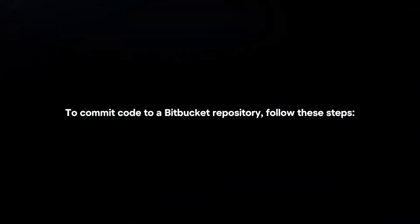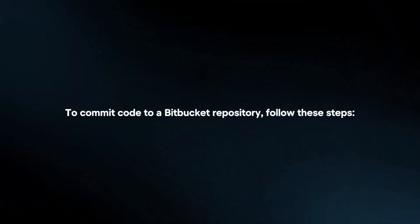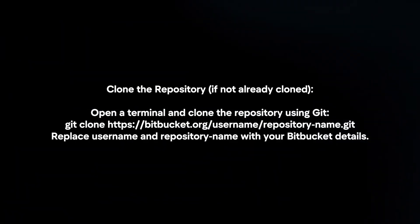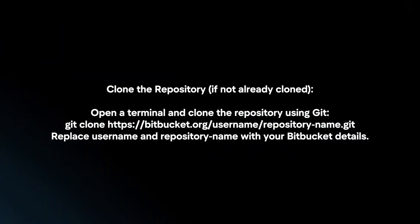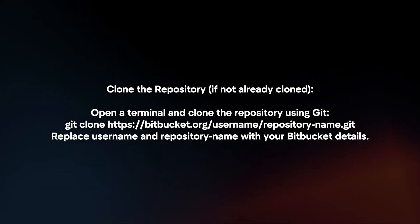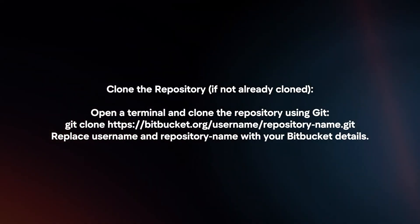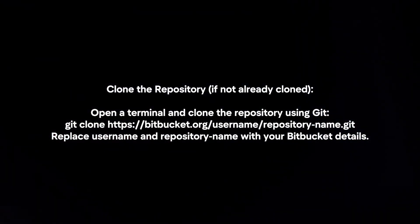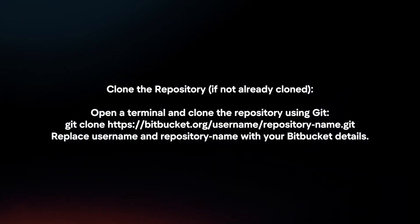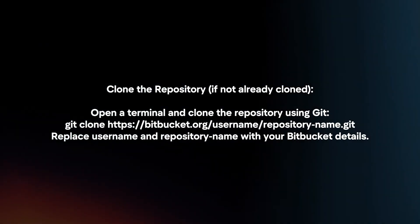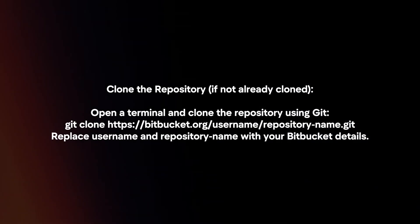To commit code to a Bitbucket repository, follow these steps. First, clone the repository. Open a terminal and clone the repository using Git, replacing the username and repository name with your Bitbucket details.